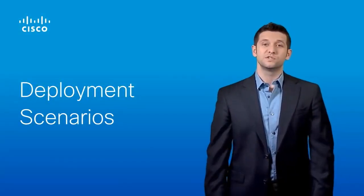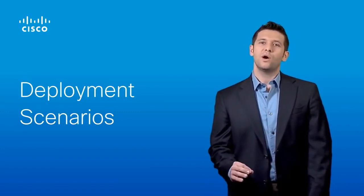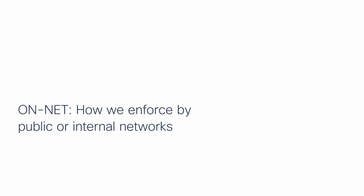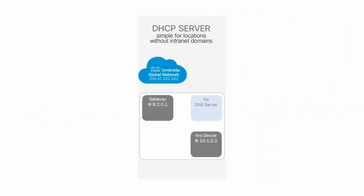Let's move on to the technical details for Umbrella, starting with deployment scenarios. We'll cover how Umbrella can be deployed on-network and off-network. Our first deployment scenario is for on-network protection. The simplest setup is using a DHCP server built into a router, switch, Wi-Fi access point, or firewall, or installed on a Windows server. With one minor edit — changing the DNS IP address to that of the Umbrella Global Network, which is 208.67.222.222 — it will tell any device connected to a network to point DNS to Umbrella.